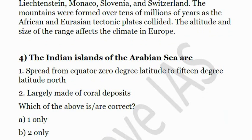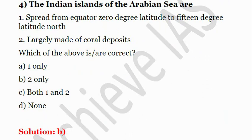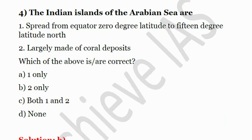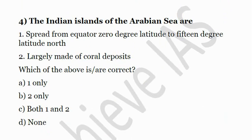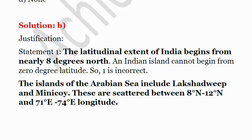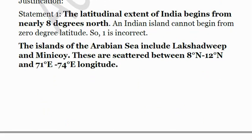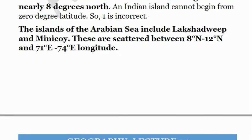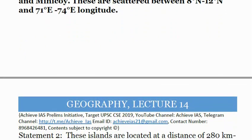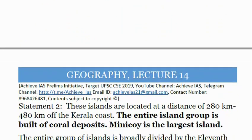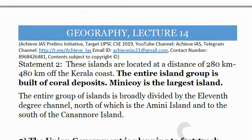The fourth question: the Indian islands of the Arabian Sea — first, spread from equator 0 degree latitude to 15 degree north latitude; second, largely made of coral deposits. The second statement is correct — they are largely made of coral deposits. But the first statement is not correct because the latitudinal extent of India begins from 8 degrees north. These Lakshadweep Islands are found between 8 degrees and 12 degrees north and 71 degrees east to 74 degrees east. The solution is B. The islands of the Arabian Sea include Lakshadweep and Minikoy, scattered between 8°N and 12°N and 71°E and 74°E longitude, located approximately 280 to 480 kilometers off the Kerala coast. The entire group is composed of coral deposits and Minikoy is the largest island.